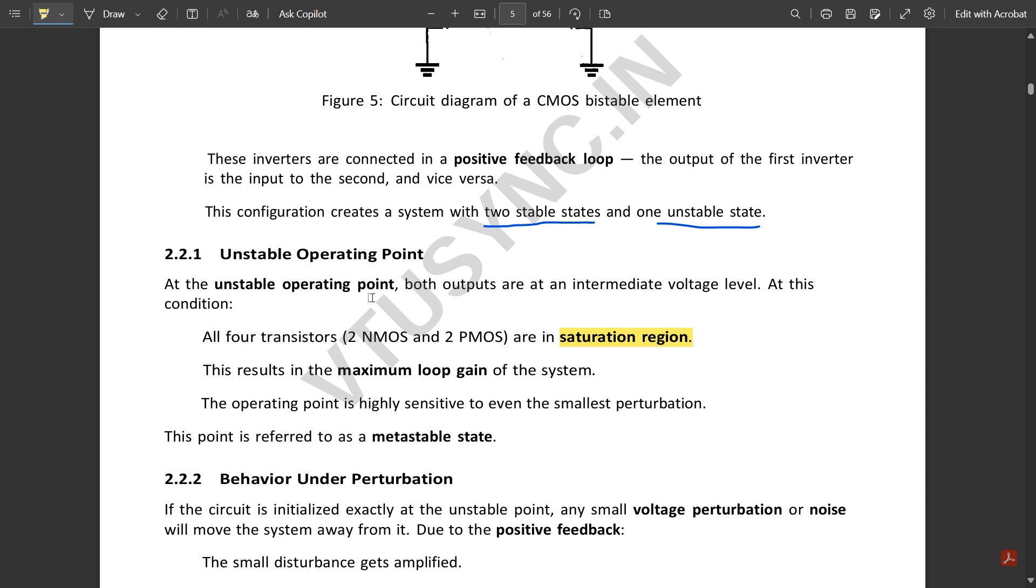In the unstable state, all the transistors are in the saturation region. This results in the maximum loop gain of the system. The operating point is highly sensitive to even the smallest perturbation. This point is referred to as the metastable state.